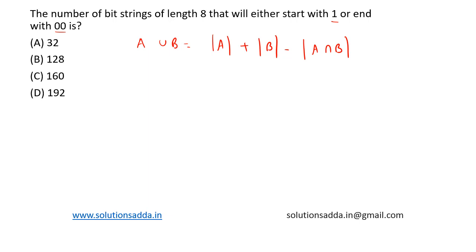First we'll find the number of strings of length 8 that starts with 1. So we have 8 positions: 1, 2, 3, 4, 5, 6, 7, 8. So 1 is fixed here, rest of the 7 places we can have either 0 or 1. So there are 2 to the power 7 possibilities. This is start with 1.